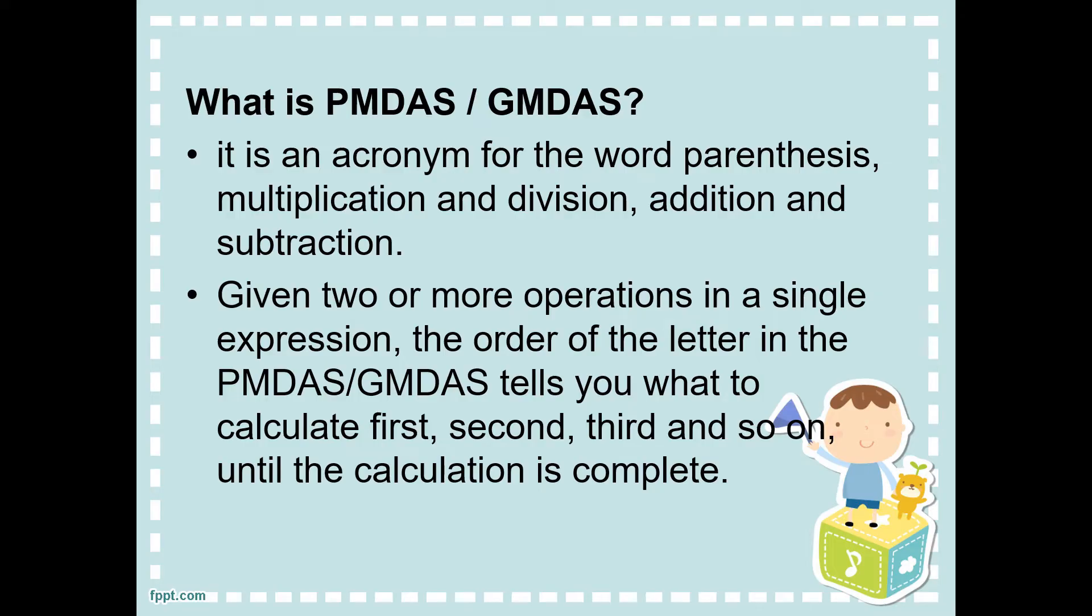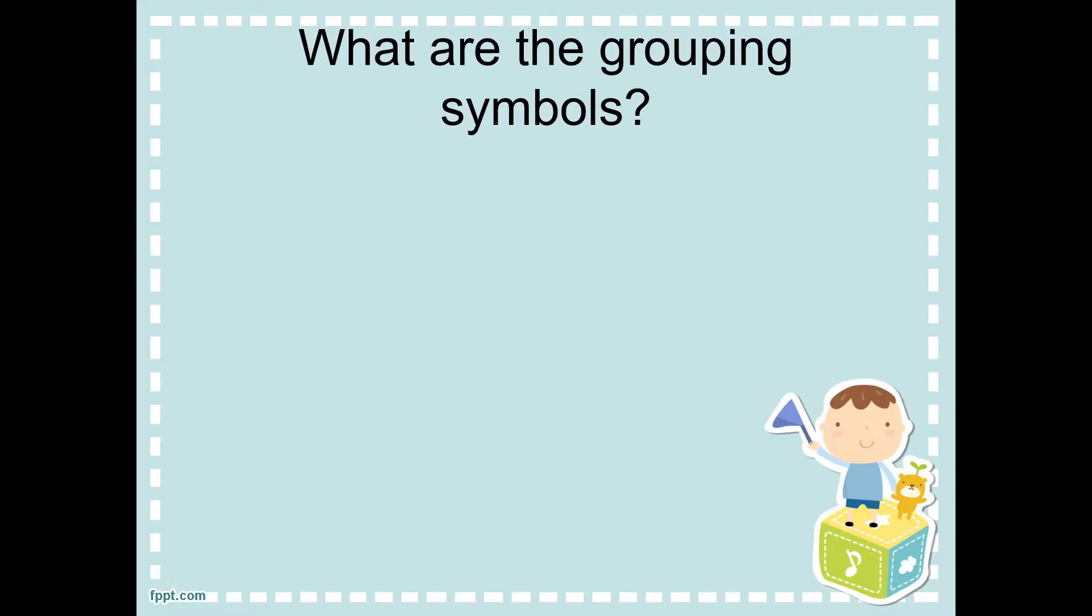G stands for group, grouping symbols. So, what are the grouping symbols we are going to use or encounter in our given numbers? First is the parentheses. This is an example of parentheses—the open and close parentheses. Next is the bracket and the braces.